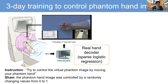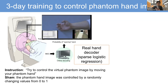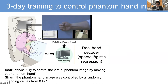We then tried to make this feedback training a treatment for phantom limb pain, applying BCI training for three days to achieve more sustainable and significant pain reduction. We used a virtual hand image of the phantom hand — taking a picture of the intact hand, flipping it left to right, and making a hand image of the phantom hand.